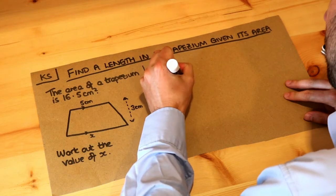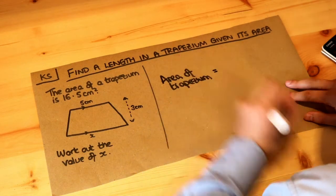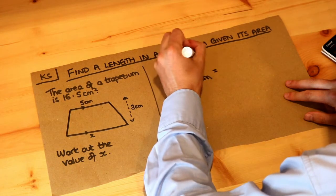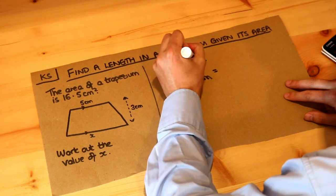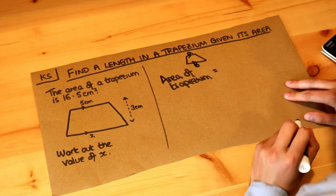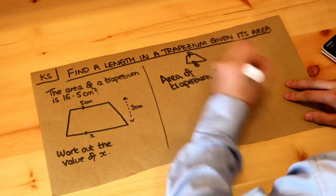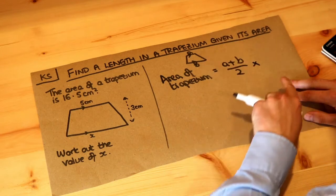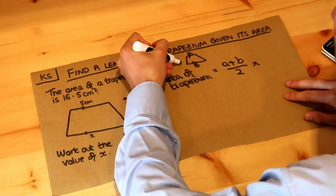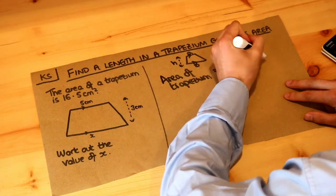So the area of a trapezium, remember, was the average of the parallel sides. If you have two parallel sides a and b, we do the average of the parallel sides which is a plus b over two, and then we multiply it by the height of the trapezium. We saw that in a previous video.